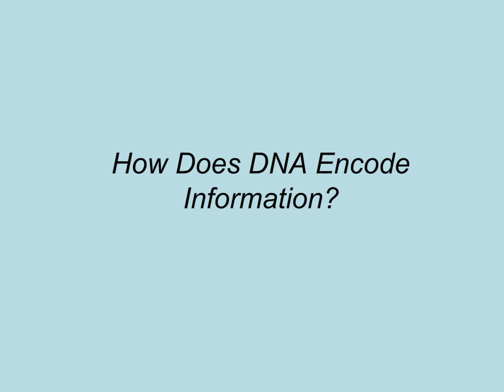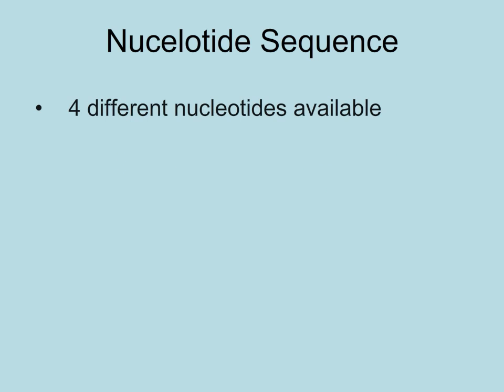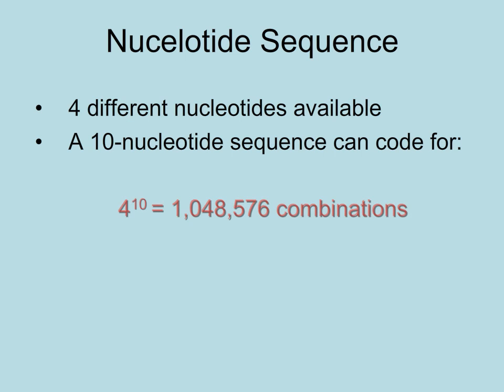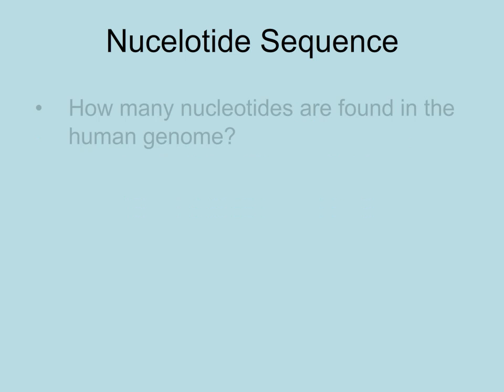DNA carries information in the cell through the nucleotide sequence. A wide variety of information can be encoded because the four different nucleotides can be used for each space in the DNA instructions. For example, in just a ten-nucleotide sequence, one of four nucleotides can be placed in each spot, resulting in over one million different possible combinations. But organisms contain much more than ten nucleotides. Humans have over three billion base pairs, and the possible combinations would be four to the power of three billion.